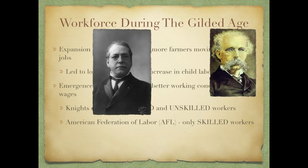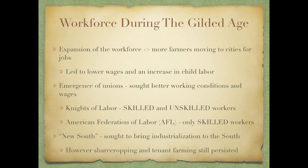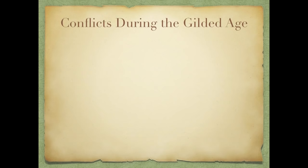Then we have the American Federation of Labor, led by Samuel Gompers — also known as the AFL — which only allowed skilled workers and was much more successful. The New South was the idea that the South should become industrialized. Although this did happen in some areas, sharecropping and tenant farming still persisted throughout much of the South.